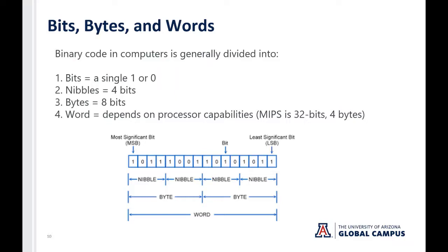Since we're talking about binary numbers, here's some vocabulary that will be helpful throughout the course. Binary numbers in computers are divided into four categories. A bit is a single one or zero — the voltage is either high or low. A nibble is four bits. A byte is eight bits. And in the case of the MIPS processor, a word is 32 bits or four bytes — so the MIPS processor is a 32-bit processor. When speaking of binary, we're talking about base two, as opposed to our typical decimal system, which is base ten. In binary, each digit is raised to the power of two: two, four, eight, sixteen, and so on.